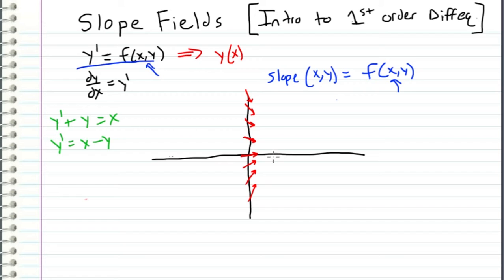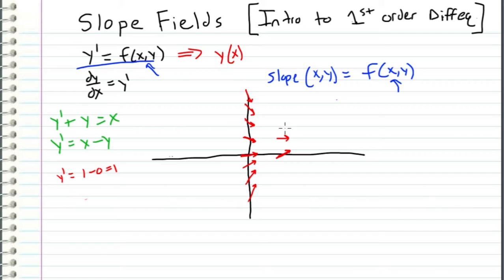Moving to where x equals 1: when x is 1 and y is 0, y prime equals 1 minus 0, which is 1 — so we have a positive slope of 1. As we increase in the y direction, this slope decreases because we are subtracting the value of y. So the slope goes to 0, then decreases further. Going down the x-axis, the slope increases — for example, we get a slope of 2 and so on.